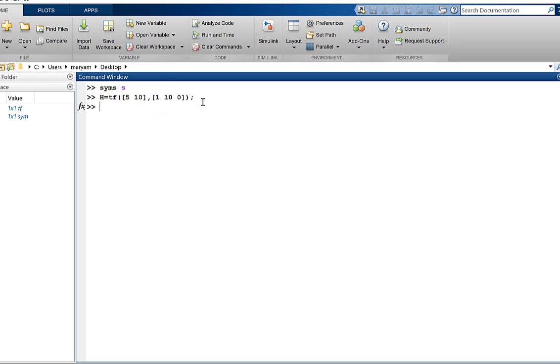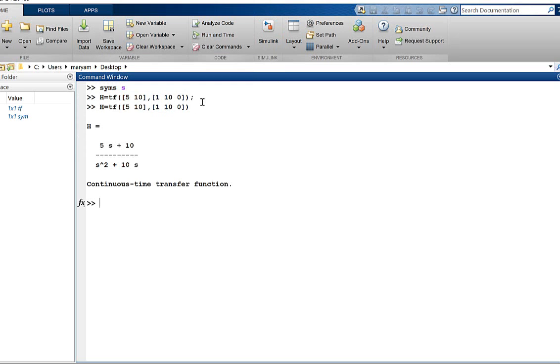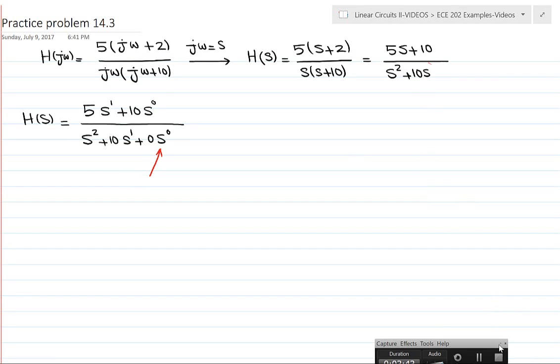Let me take the semicolon out so you can see the transfer function here. See, 5s plus 10 and s squared plus 10s, the same thing as we have here: 5s plus 10 and then s squared plus 10s.